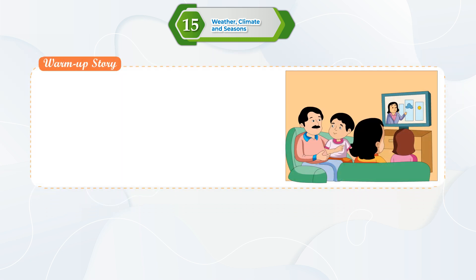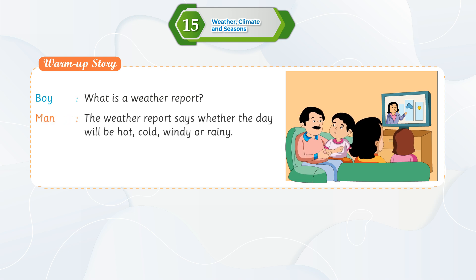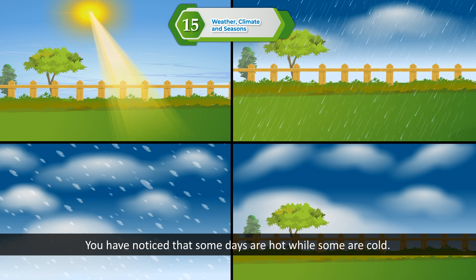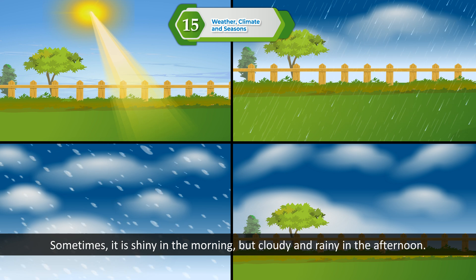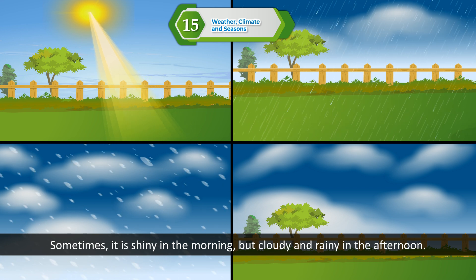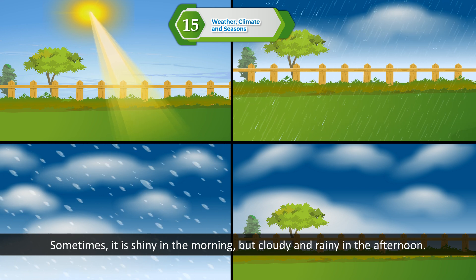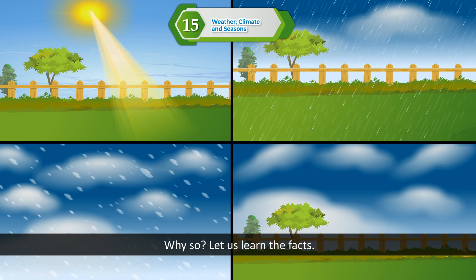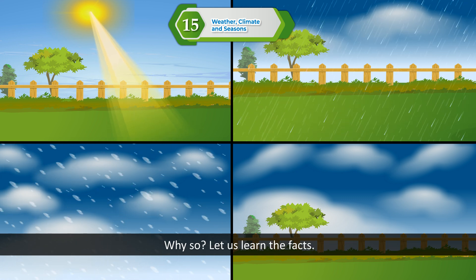Warm-up story. Boy: What is a weather report? Man: The weather report says whether the day will be hot, cold, windy, or rainy. You have noticed that some days are hot while some are cold. Sometimes it is sunny in the morning but cloudy and rainy in the afternoon. Why so? Let us learn the facts.